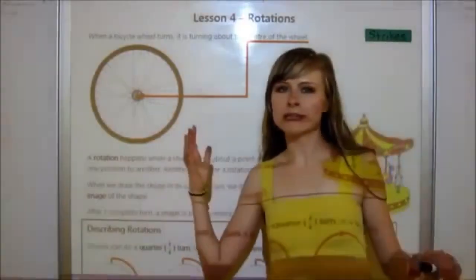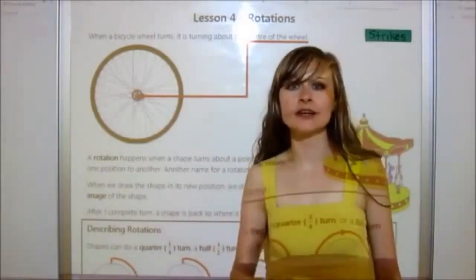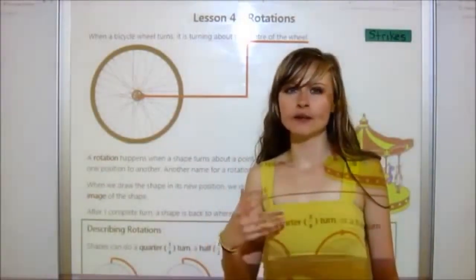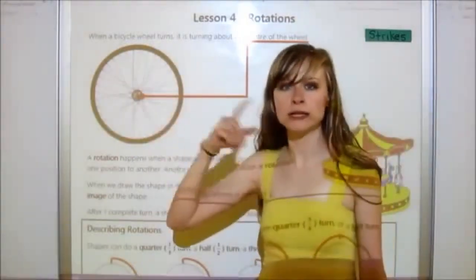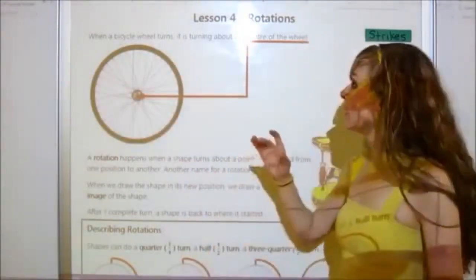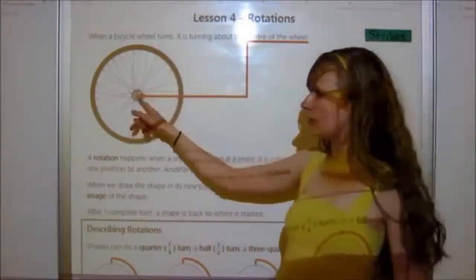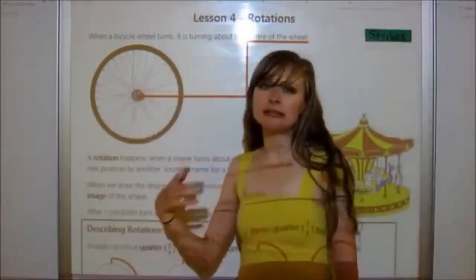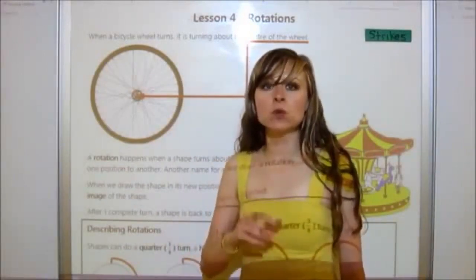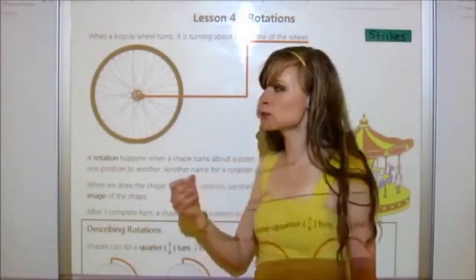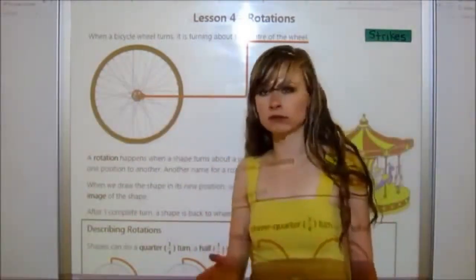First of all, let's relate rotations to real life. We've got a bike wheel here, and a bike wheel rotates. It rotates about the center of the wheel. That's how you describe how an object is rotating — you use the word 'about' to say it's rotating on that part. So it rotates about the center of the wheel.